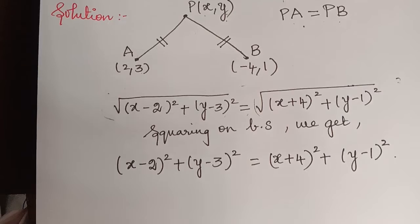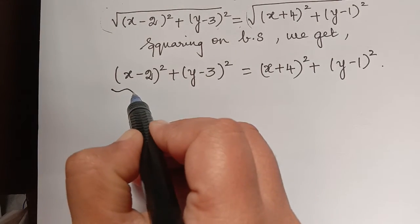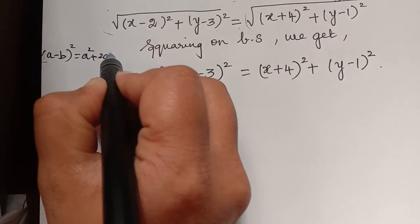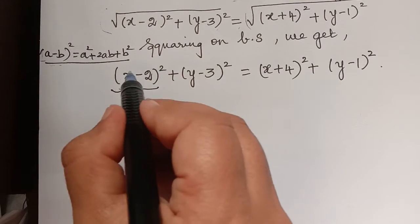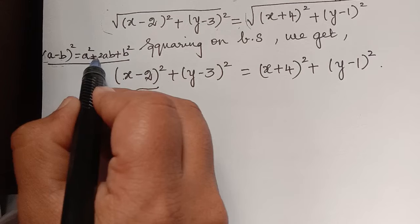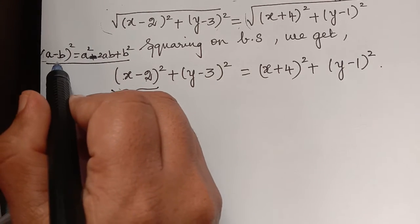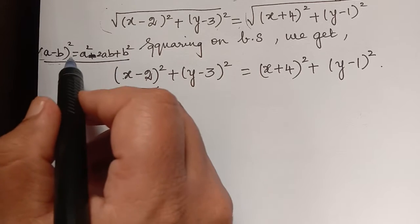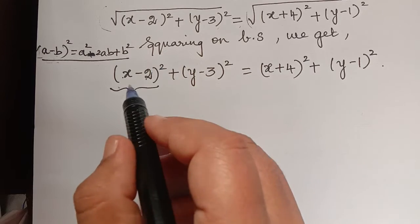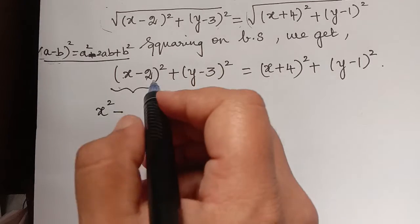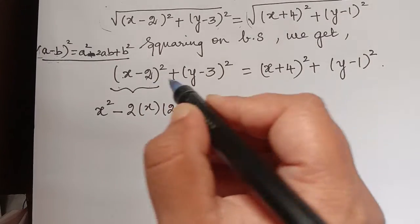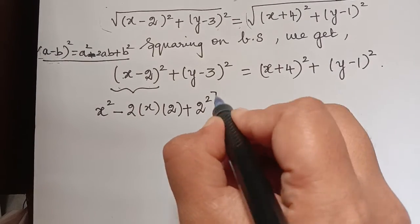Now let us simplify this equation. On the left-hand side, we expand using the formula (a − b)² = a² − 2ab + b². So (x − 2)² becomes x² − 4x + 4, and (y − 3)² becomes y² − 6y + 9. On the right-hand side, (x + 4)² uses the formula (a + b)² = a² + 2ab + b².